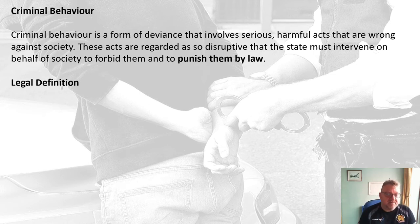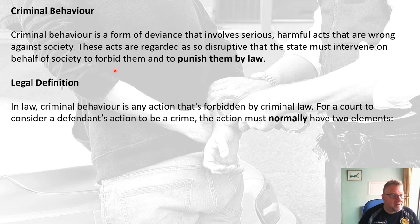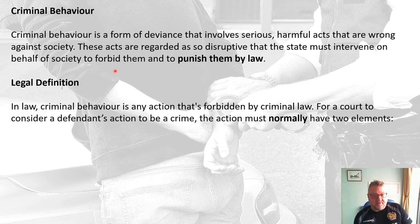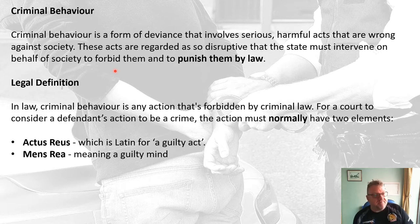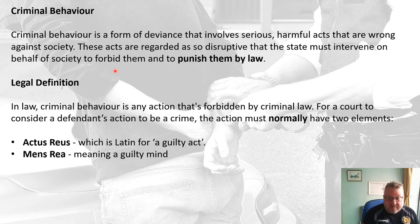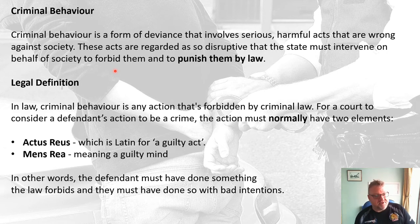We're now going to go through the legal definition of what a crime is. In law, criminal behaviour is any action that's forbidden by criminal law. For a court to consider a defendant's action to be a crime, the action has to have two elements. It's got to have what's called in Latin an actus reus — the act itself has to be guilty, it has to be wrong and illegal. But at the same time you've got to have a mens rea — a guilty mind, so the intention behind it is guilty. In general, in a court of law, for it to be a crime it has to be both an actus reus and a mens rea.